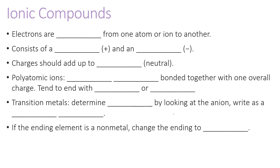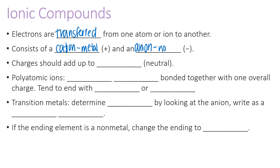We're going to start by reviewing ionic compounds. In ionic compounds, electrons are transferred from one atom or ion to another. This results in a cation, which has a positive charge, and an anion, which has a negative charge. Usually the cation is a metal and the anion is a non-metal, but it could also include a polyatomic ion.